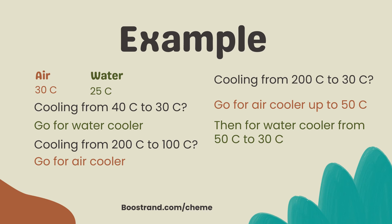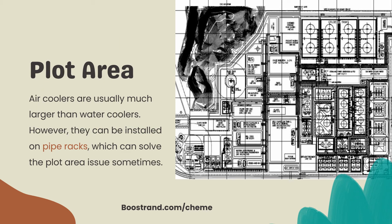This means less load on the cooling water system. The plot area of the plant should also be considered when choosing the cooler type. Water and liquids have a much higher heat transfer coefficient U than air, so a higher heat transfer coefficient means less heat transfer area for a constant temperature approach. Since temperature approach is always a factor in favour of water coolers, an air cooler will always require a higher heat transfer area than a water cooler, meaning more plant area is needed. However, a solution is to install the air-cooled exchanger on the pipe rack, which can save plant plot area.